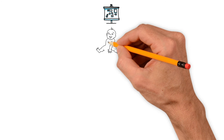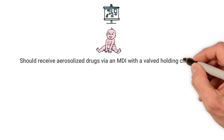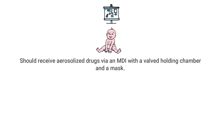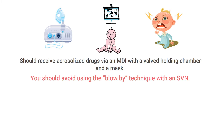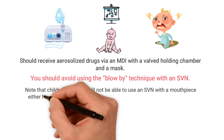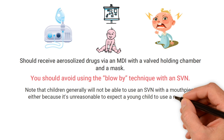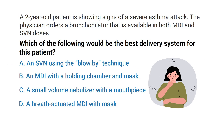In general, most infants and small children should receive aerosolized drugs with an MDI with a valved holding chamber and mask, which is usually more effective than a small volume nebulizer. You should avoid the blow-by technique with an SVN because much of the medication is wasted. An SVN with a mask could be considered, but small children often won't tolerate it well. Children also generally cannot use an SVN with a mouthpiece for an entire treatment.